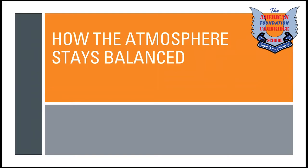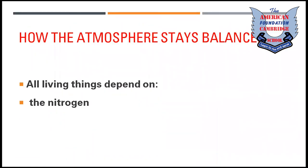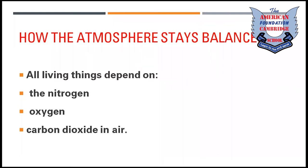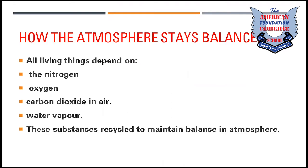How the atmosphere stays balanced: all living things depend on nitrogen, oxygen, carbon dioxide in the air, and water vapors. Along with these gases — nitrogen, oxygen, carbon dioxide — we also depend on water vapors that condense and force rain. These substances recycle to maintain balance in the atmosphere.